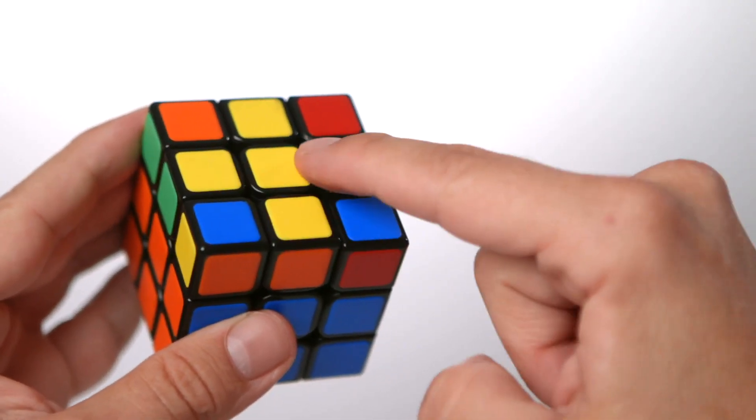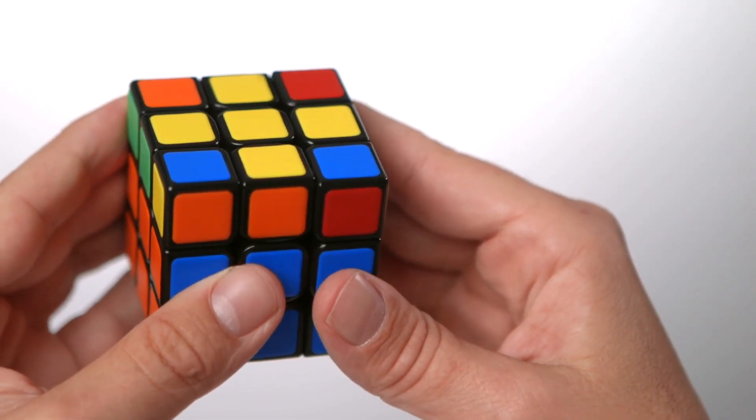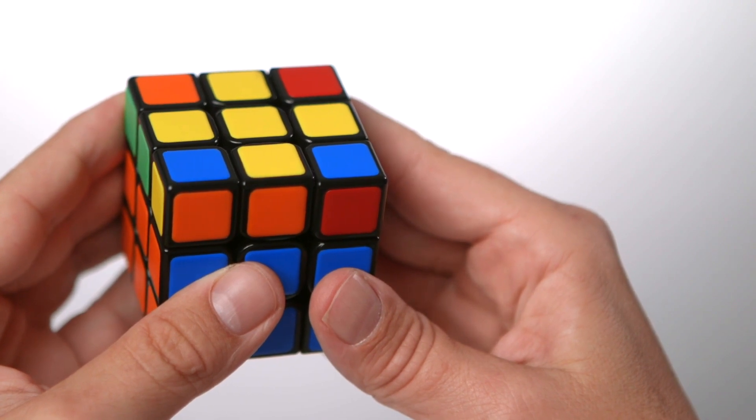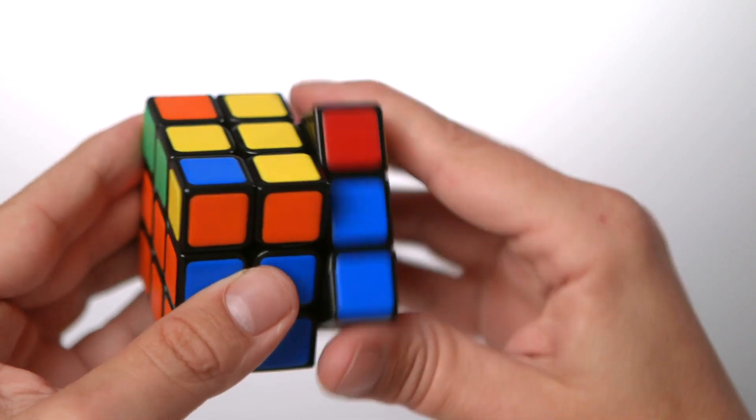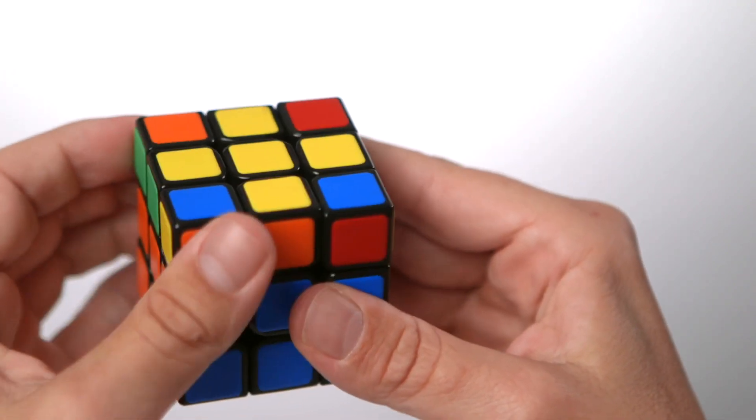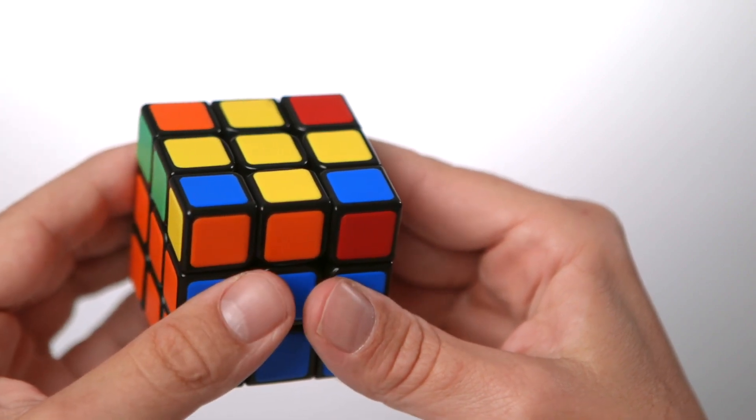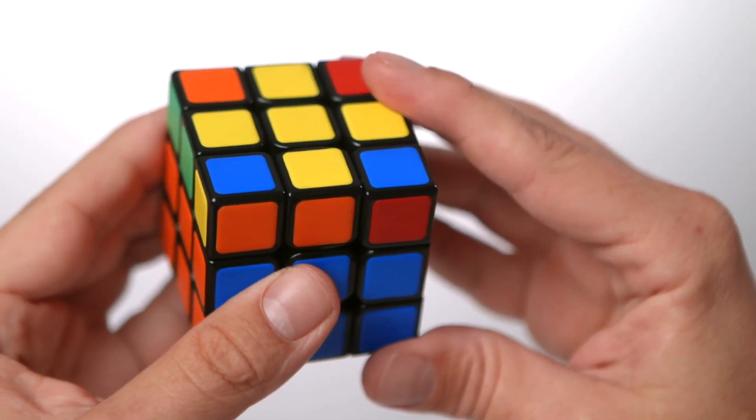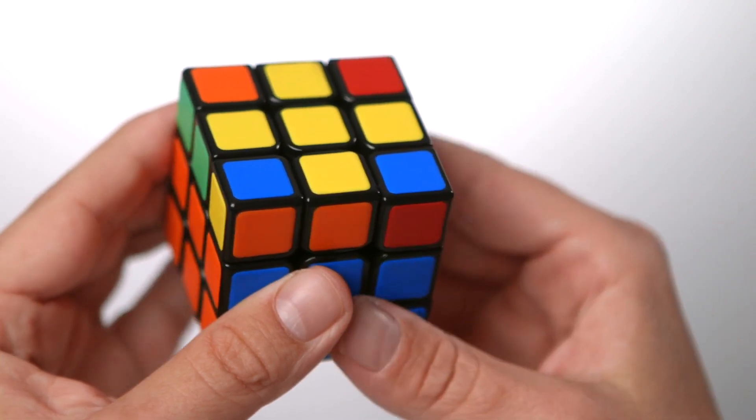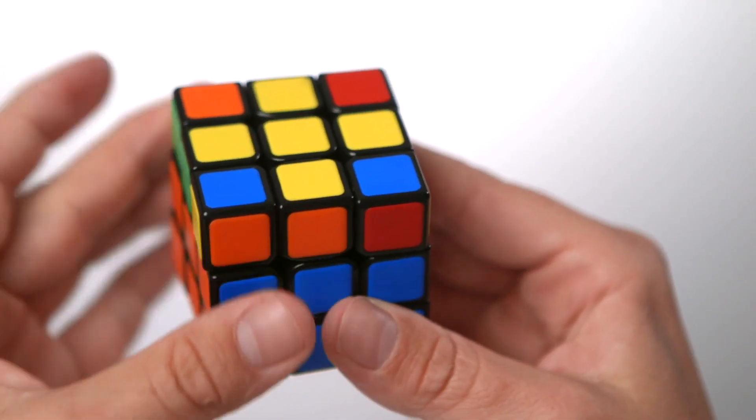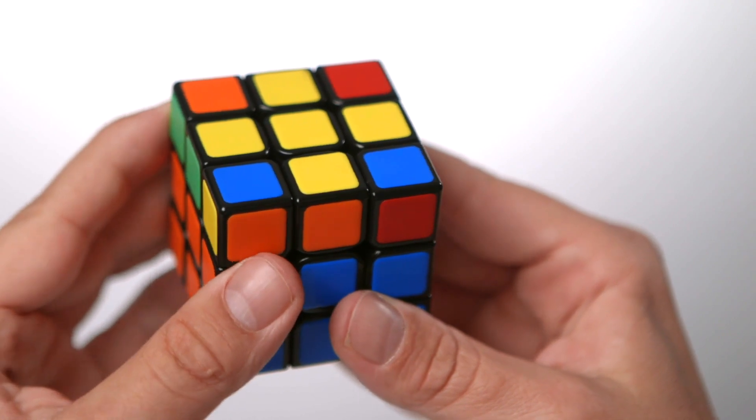Let's start with the cross. Here's the algorithm. We know this move only involves two sides, right and top, and we move them each four times. The right will go up twice and down twice and the top moves clockwise each time.